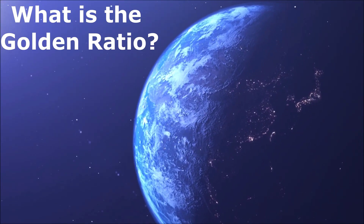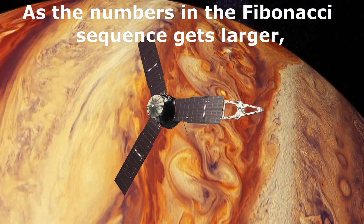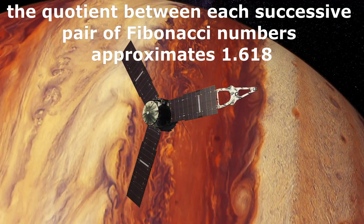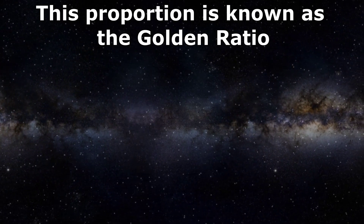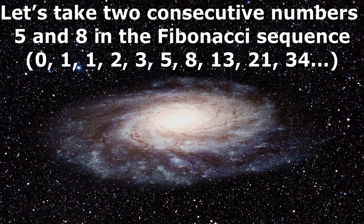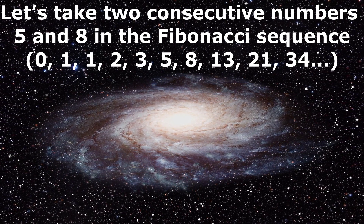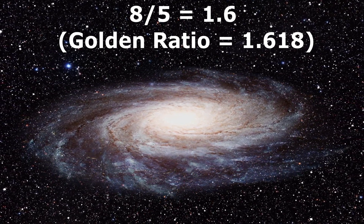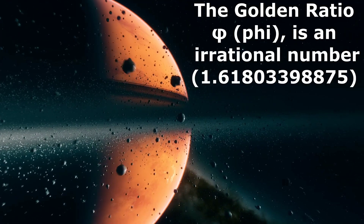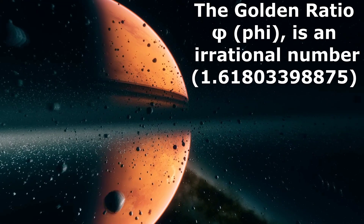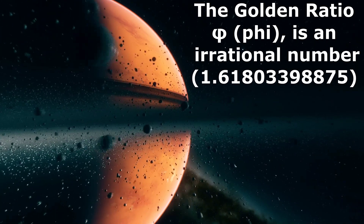Then, what is the golden ratio? As the numbers in the Fibonacci sequence get larger, the quotient between each successive pair of Fibonacci numbers approximates 1.618. This proportion is known as the golden ratio, also by other names like golden mean, phi, and divine proportion. For example, taking two consecutive numbers — 5 and 8 — dividing 8 by 5 gives 1.6, which is very close to the golden ratio. The golden ratio, denoted by the Greek letter phi, is an irrational number approximately equal to 1.61803398875.